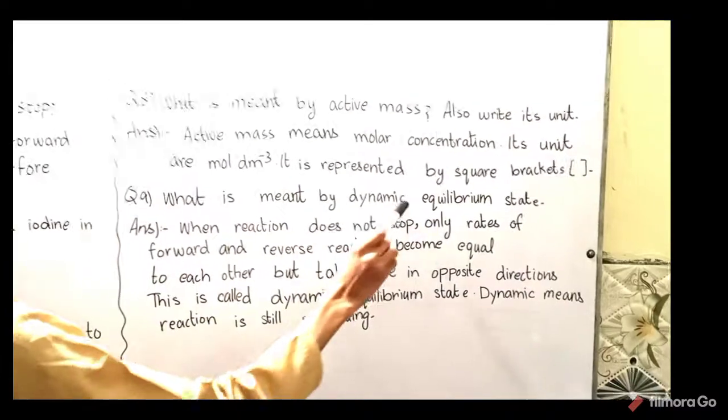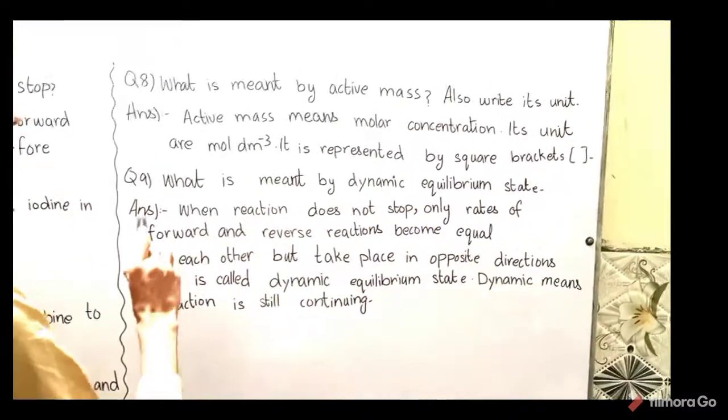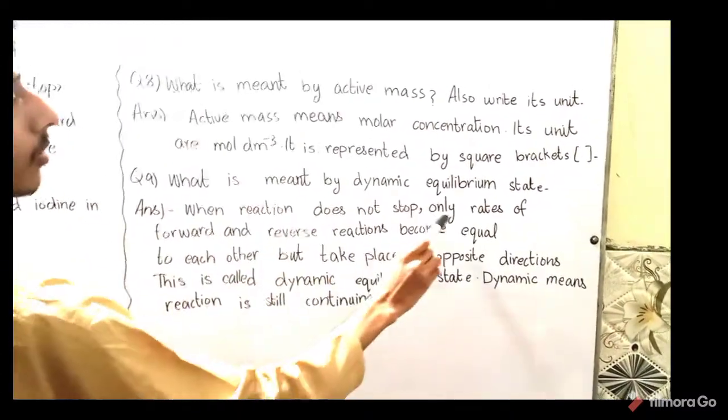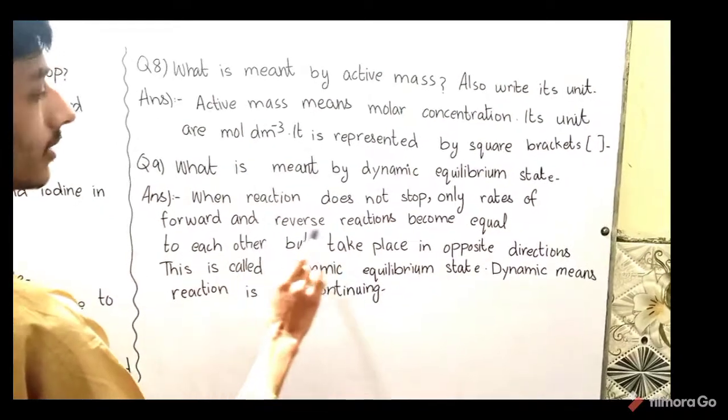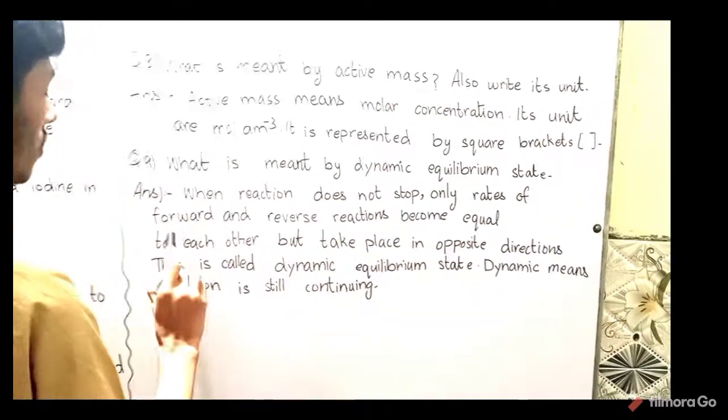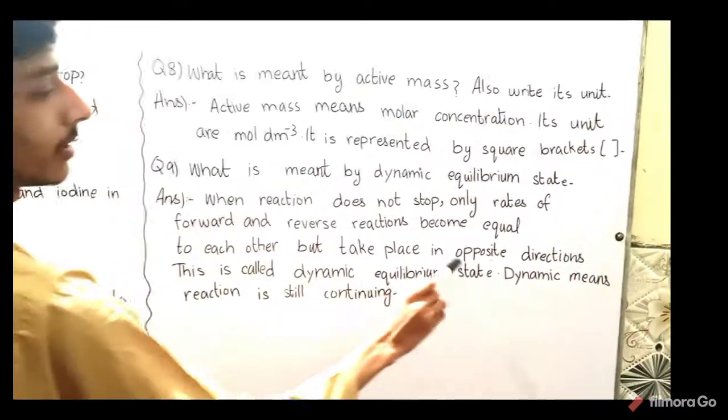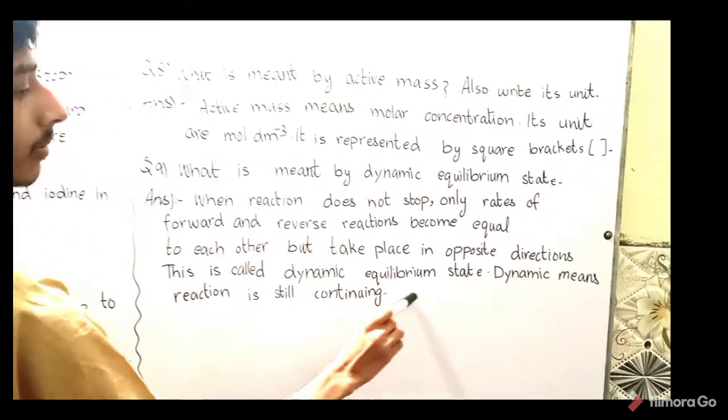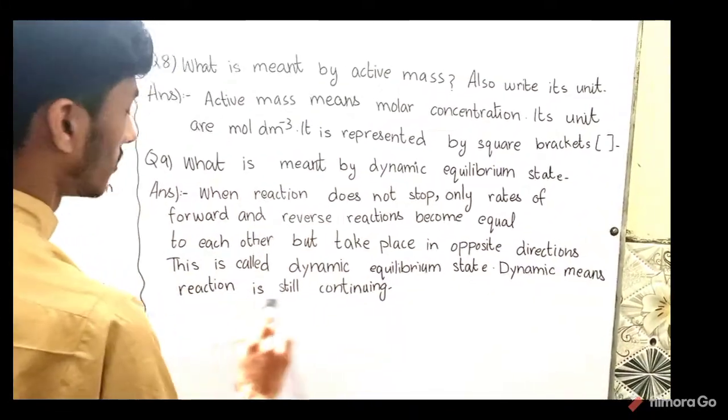Question number nine: What is meant by dynamic equilibrium state? Answer: When reaction does not stop, only rates of forward and reverse reactions become equal to each other but take place in opposite directions. This is called dynamic equilibrium state. Dynamic means reaction is still continuing.